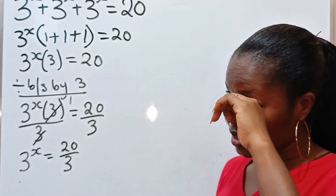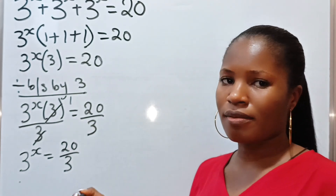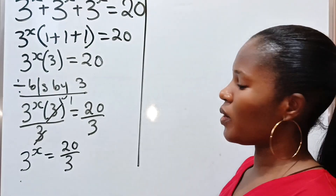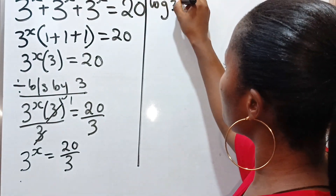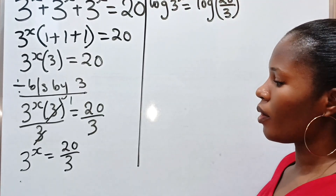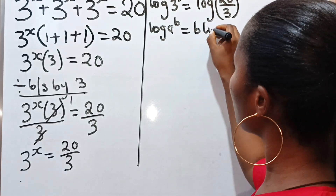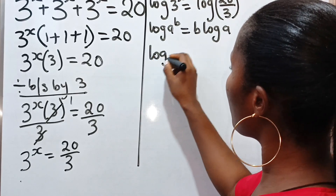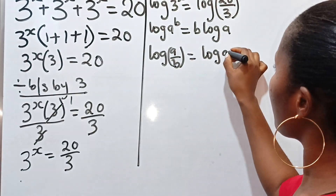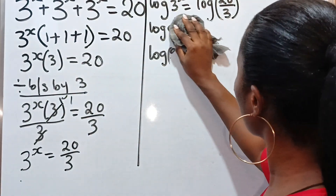Anytime you are solving mathematics and your power is your variable, the only way to find your variable is to introduce log or ln to both sides of the equation. So let's introduce log to both sides. We have log of 3 to the power of x is equal to log of 20 over 3. Now, log A raised to the power of x equals x multiplied by log A, and log A divided by B equals log A minus log B. We are going to apply these two laws.